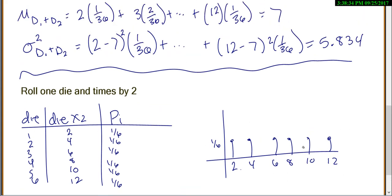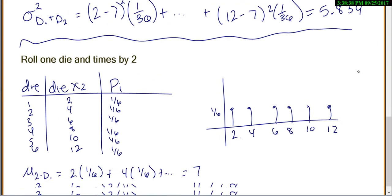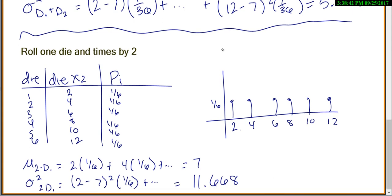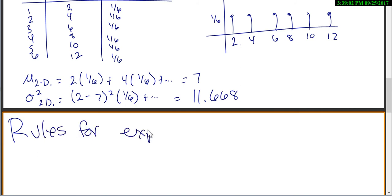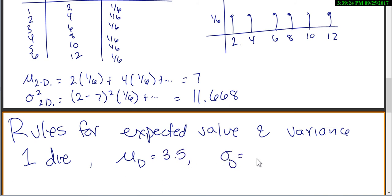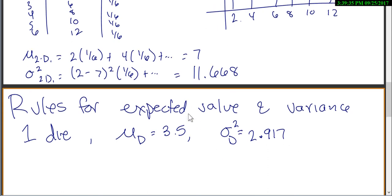Notice, the averages stayed the same, the mean stayed the same, the variances changed from 5.8 to 11.6. So that was going back to the basics and finding it the long way. Now let's see what happens if instead we just use our rules for expected value and variance. So let's say if you have one die, then the mean for one die is going to be 3.5. And the variance for one die is 2.917. You can do this by actually just kind of going through and doing it the longhand way just like we did up above.